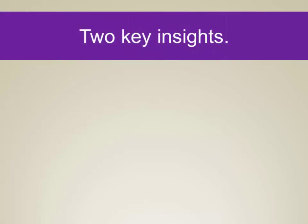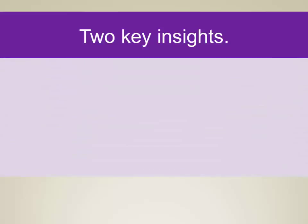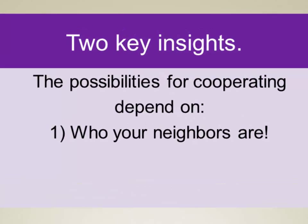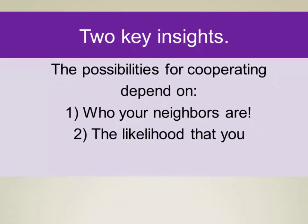To conclude, we've defined tit-for-tat, evolutionarily stable strategy, and the Iterated Prisoner's Dilemma. Two key insights: first, the possibilities for cooperation depend on who your neighbors are — if you're a cooperator living among defectors, you won't get cooperation off the ground, but if you live among cooperators, you will. Second, the possibilities for cooperation also depend on the likelihood that you'll interact with your neighbors. If you can locate cooperative neighbors and interact with them, cooperation can take off. If you can avoid defectors, you avoid losing out to them. The structure of communities is very important for the evolution of cooperation.